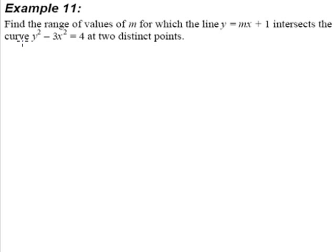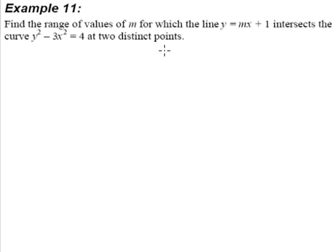Example 11. Find the range of values of m for which the line y = mx + 1 intersects the curve y² - 3x² = 4 at 2 distinct points.